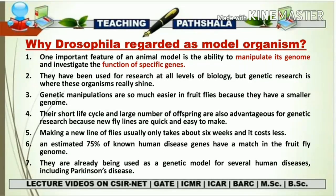Their short life cycle and large number of offspring are advantageous for genetic research because new fly lines are quick and easy to make. Making a new line of flies usually takes about six weeks and costs less. Due to the short life cycle, new Drosophila lines are ready in six weeks and the overall maintenance cost is very low.